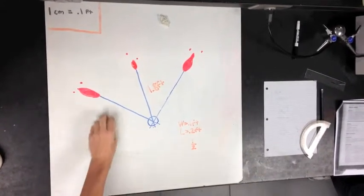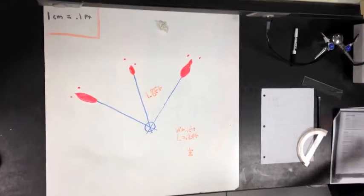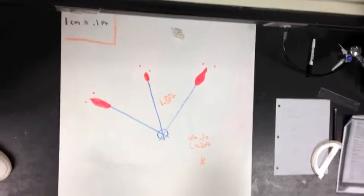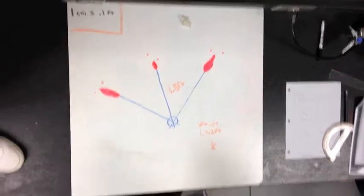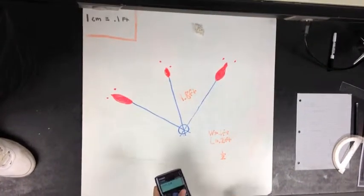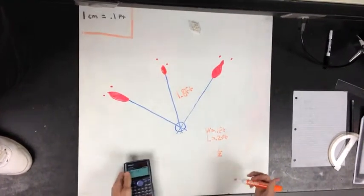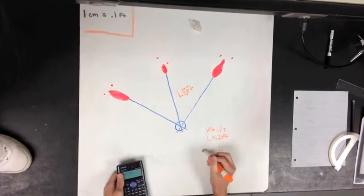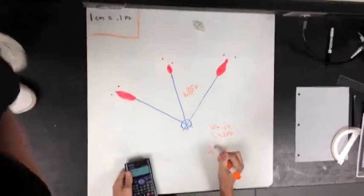So then what you do is you take the inverse sine of the one half. So you take the inverse sine, which is equal to 30 degrees.